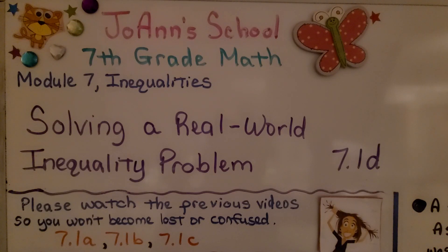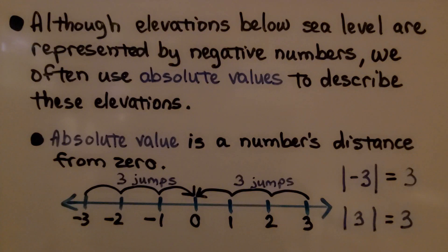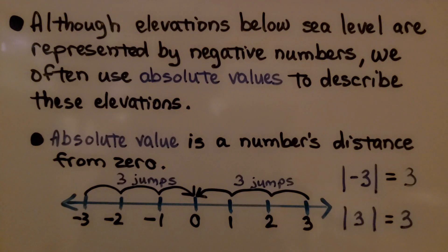We're at Lesson 7.1d, Solving a Real-World Inequality Problem. Although elevations below sea level are represented by negative numbers, we often use absolute values to describe these elevations.